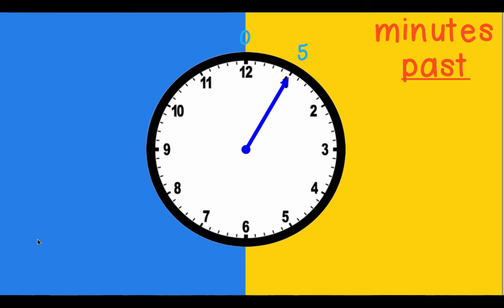As we keep moving around the clock, we keep counting in lots of five because between each hour number, there are five individual minutes. One, two, three, four, five.